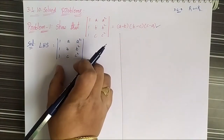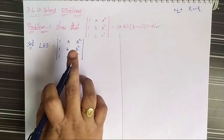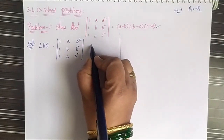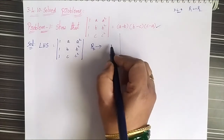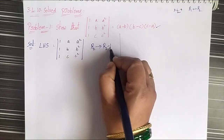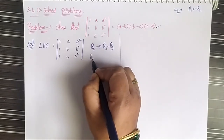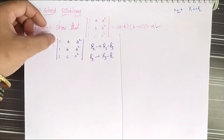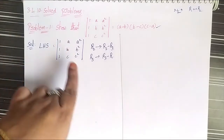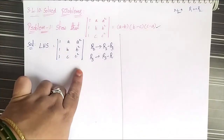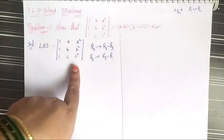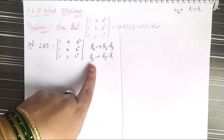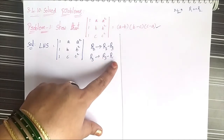For this step, we have to use two operations: R2 becomes R2 minus R3, and R3 becomes R3 minus R1. R1 is the first row, R2 the second row, R3 the third row, C1, C2, C3 are the columns. We apply R2 → R2 minus R3 and R3 → R3 minus R1.